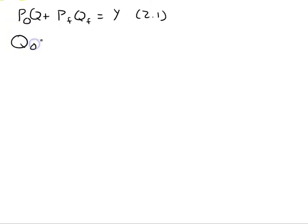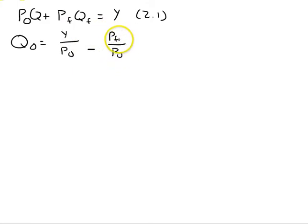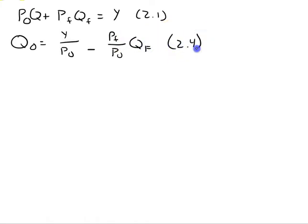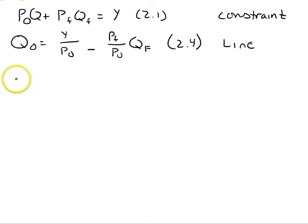When we rearrange that equation into a budget line, we saw that the quantity of all other goods was equal to income divided by the price of all other goods, minus the ratio of the two prices — where the price of the good on the horizontal axis was on top and the price of the good on the vertical axis was on the bottom — multiplied by the quantity of food. That was our budget line.